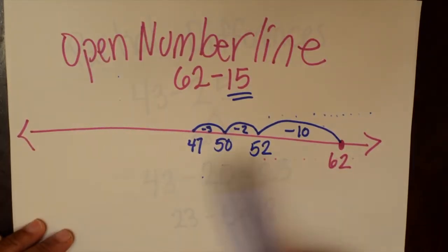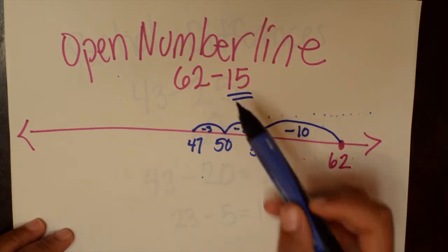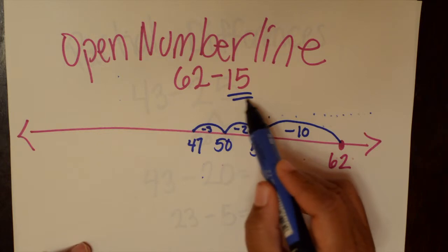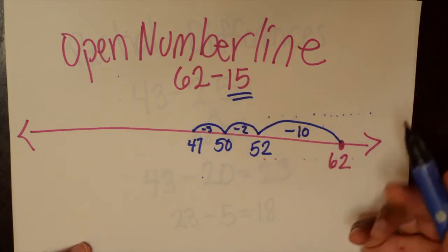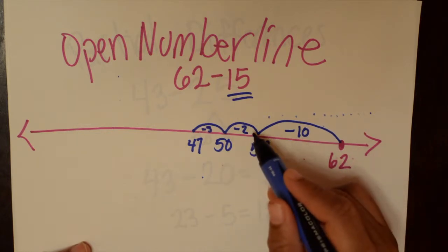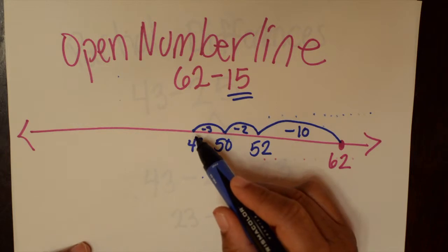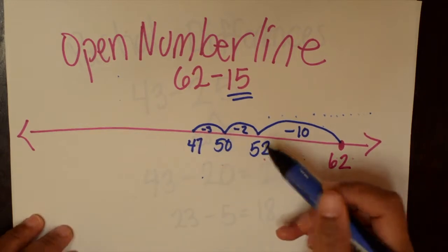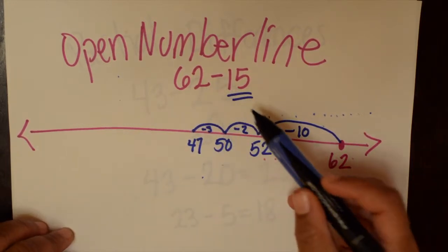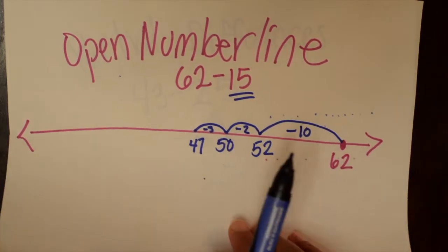Another strategy is the open number line. And so this is where you draw the line, you plot the number, and then the kids, there's lots of ways that they can do it, jumping back, but they know that this is going to be their jumping number. They're going to have to decompose 15 in some kind of way. So we start at 62, we jump back 10, we get to 52, we jump back two more so we can get to a friendly number, we get to 50, and then we jump back three more and we got to 47. So that was one way to show this on an open number line. There's lots of different ways to show it on an open number line, but that is one way.